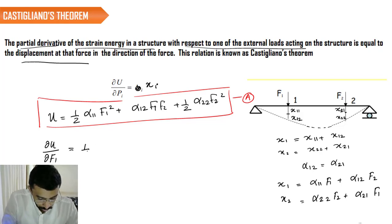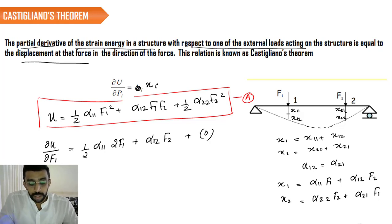So if you differentiate, it is going to be 1 by 2 into alpha 11 into 2F1 plus alpha 12 into F2 plus 0, because you do not have an F1 term in the last term. So that is going to act as a constant. Thereby the value is differential is 0, and the differential of F1 is going to be 1, and F1 squared is going to be 2F1. And if we cancel out the terms, what we are going to be left with is alpha 11 F1 plus alpha 12 F2.